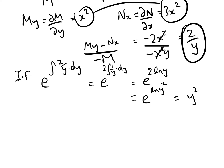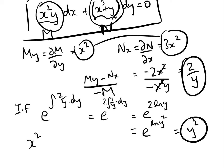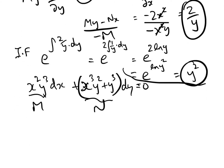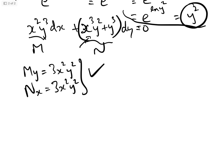So what we have to do is multiply both sides of everything by y². That gives us x²y³ dx + (x³y² + y³) dy = 0. We now have a new M and a new N. Let's see if it's exact. M_y now equals 3x²y², and N_x now also equals 3x²y². They are the same — so now it is exact.